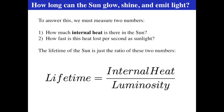Big question: how long can the Sun glow, shine, or emit light? How long has it been doing it and how long can it continue? This lifespan question bears on pretty much everything in the solar system, including the evolution of life on Earth. To know how long the Sun has been glowing, we need to know two things: how much internal heat is there, and how fast is that heat lost per second as sunlight.